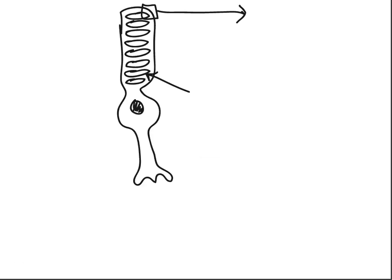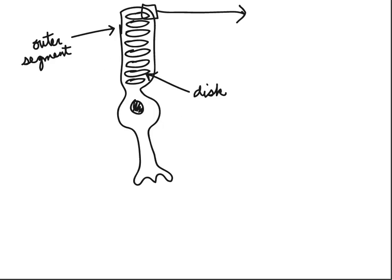We'll look at the process in a rod. It works essentially the same way in a cone. The outer segment of the rod contains the main part with the nucleus. Inside the rod, we have discs, which contain the chemicals that are sensitive to light.